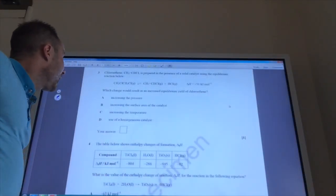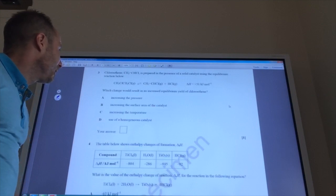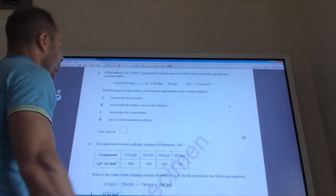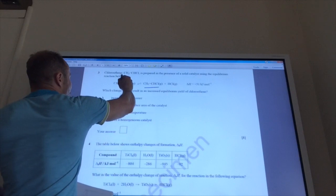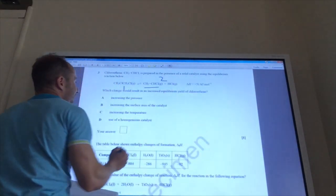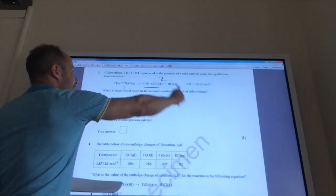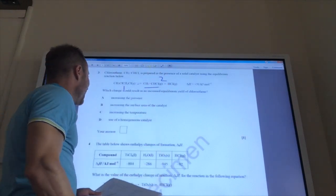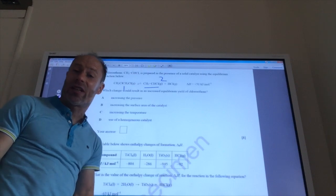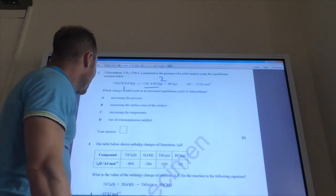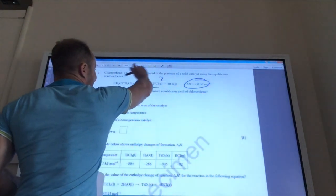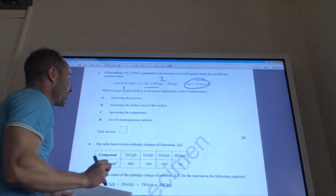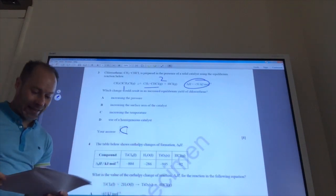Moving on to question three then. Chloroethene is prepared by that reaction. Which change would result in an increased equivalent yield of chloroethene? You've got one mole of gas on that side and two moles of gas on that side. So if you increase the pressure, it will actually go to the reactants. Increase the surface area of catalyst. Remember catalyst only increases rate of reaction. It doesn't affect yield. Increase the temperature. Well, it's an endothermic reaction. So if you increase the temperature, the reaction is driven in the endothermic direction. So the answer to three is C.